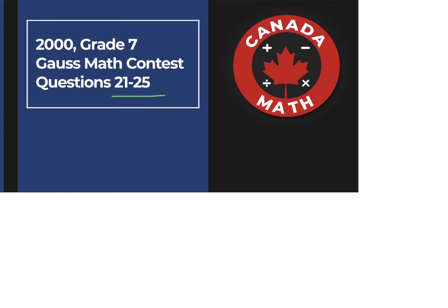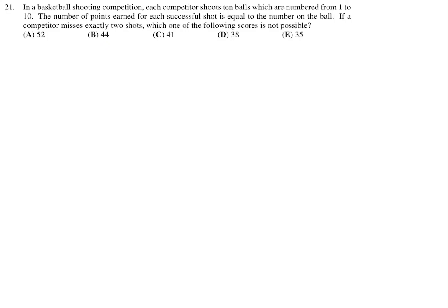Questions 21 through 25 of the 2000 Grade 7 Gauss Math Contest. In a basketball shooting competition, each competitor shoots 10 balls which are numbered from 1 to 10. The number of points earned for each successful shot is equal to the number on the ball. If a competitor misses exactly two shots, which one of the following scores is not possible?